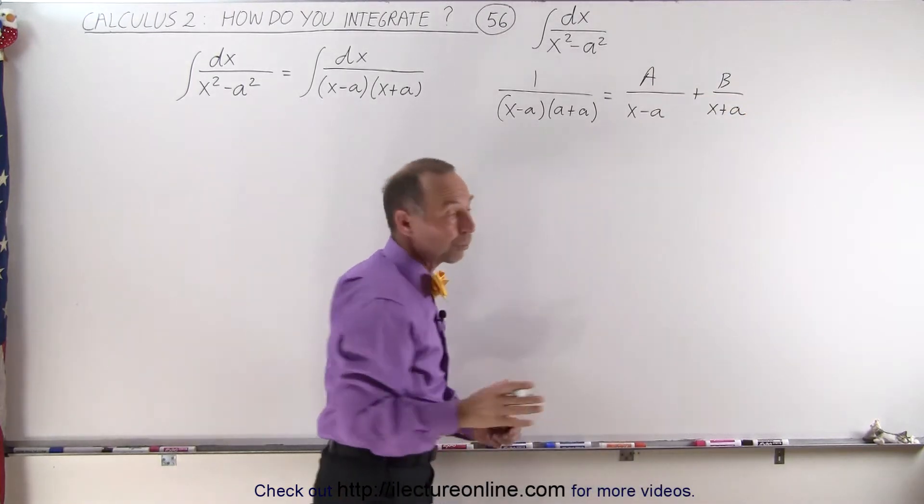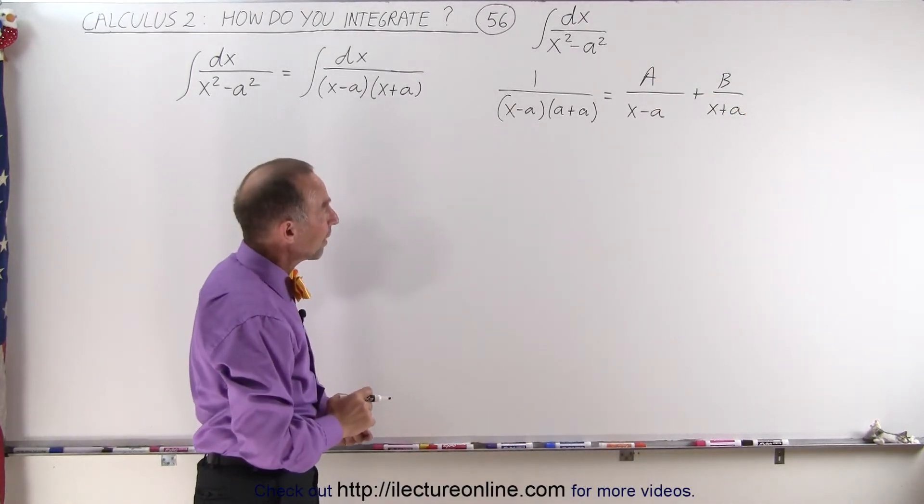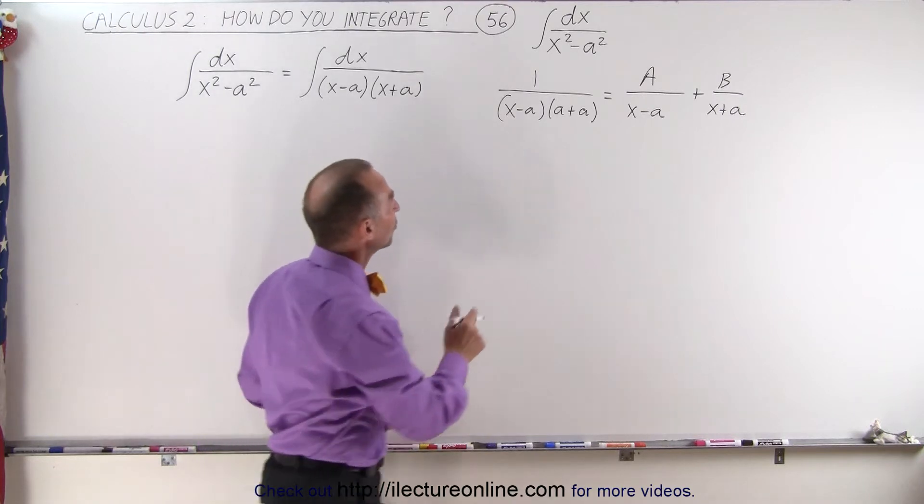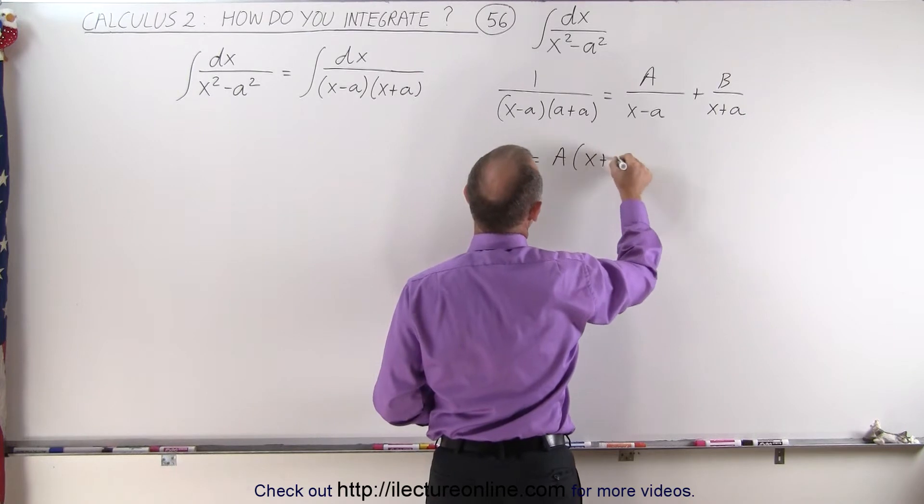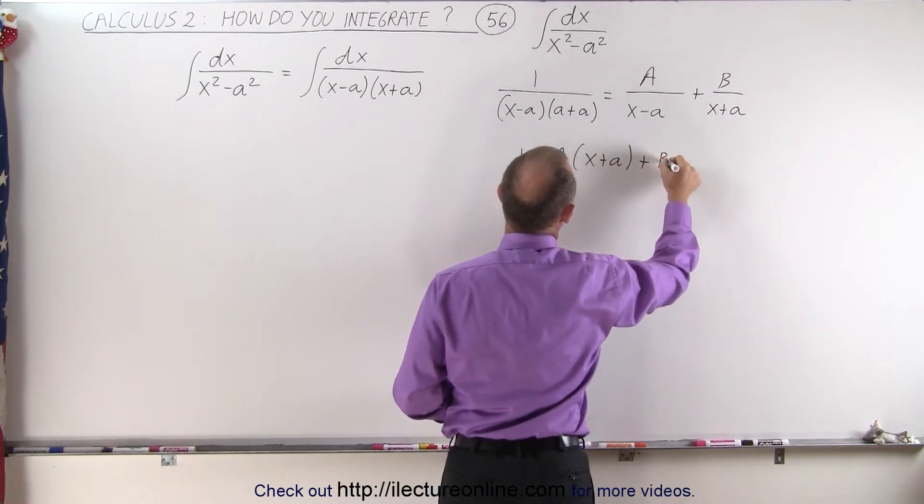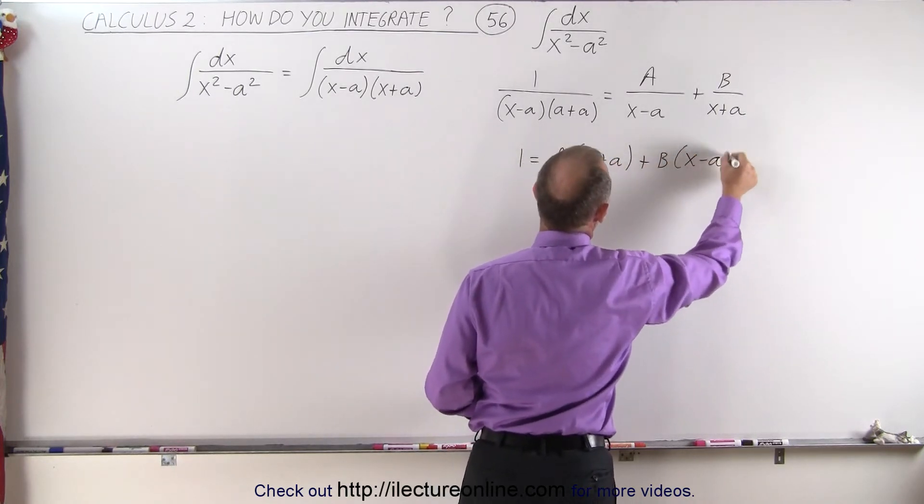And then, of course, we're going to multiply both sides of the equation by the common denominator, which means on the left side we end up with 1 equals A times x plus a plus B times x minus a.